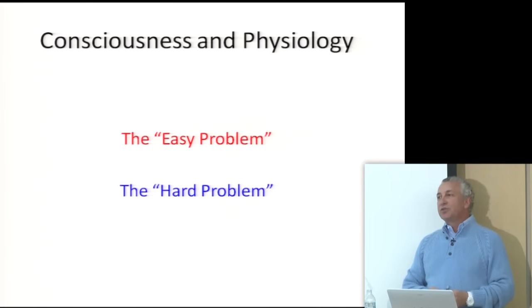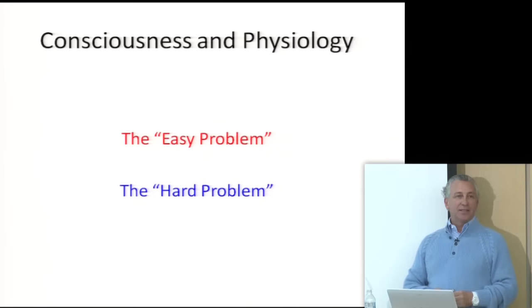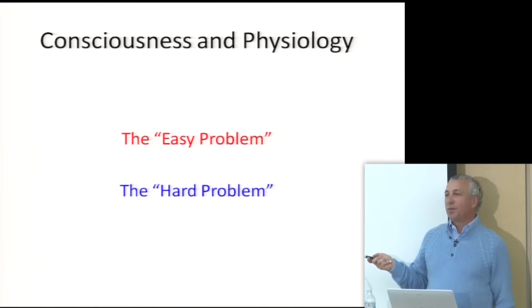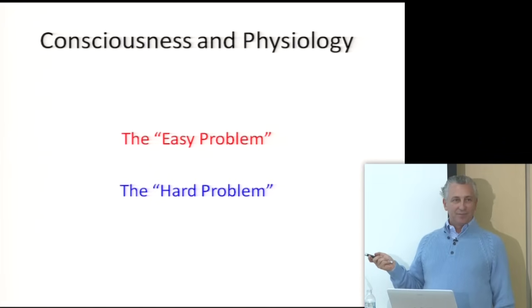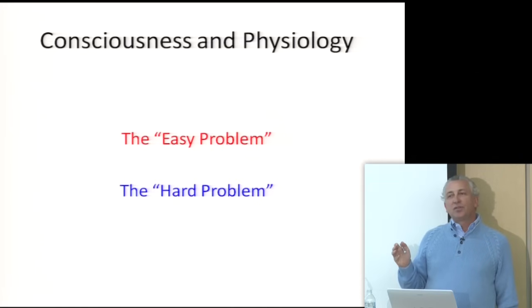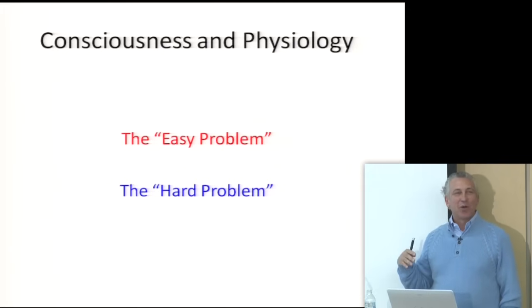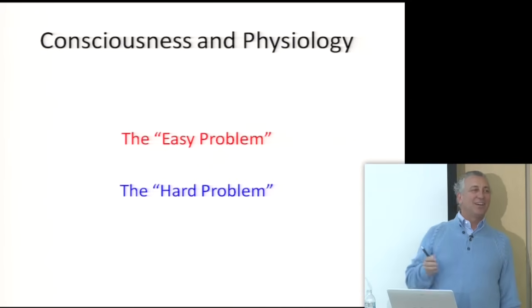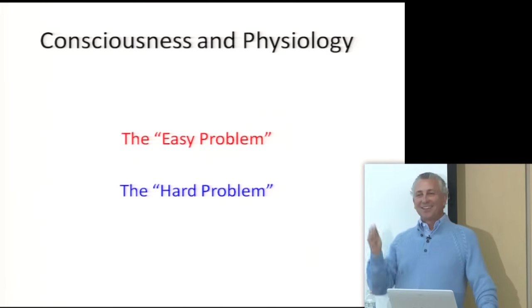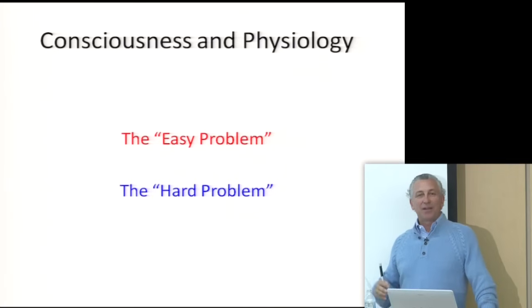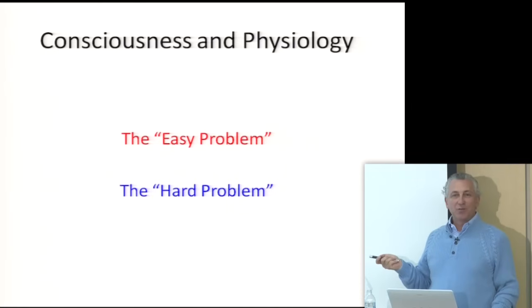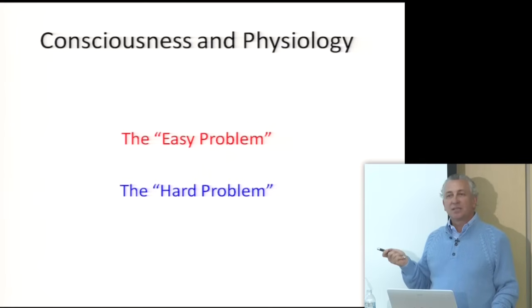Now we come to the issues of consciousness and how scientists have identified two things: the easy problem and the hard problem. The easy problem of consciousness is as easy as figuring out how many galaxies are in the universe or what is at the basis of the Higgs boson — actually quite difficult, but it's called 'easy' because it is an aspect of consciousness we will one day certainly be able to grasp.